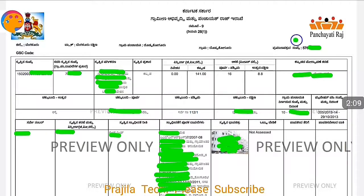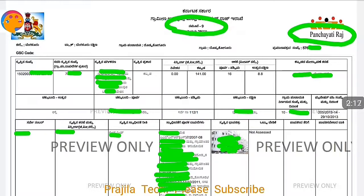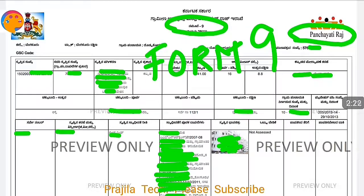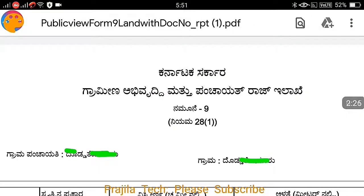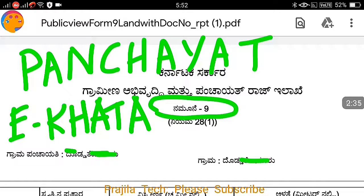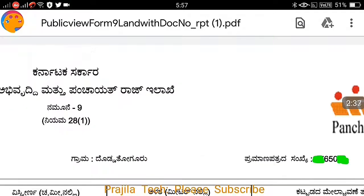What you are seeing on the screen is the village Panchayat Raj khata. It's clearly written, meaning it's a village khata, and usually it will be written as Form 9 or Form 11. This is Form 9 — a village e-khata, computer printed. Clearly you can see here Form 9.